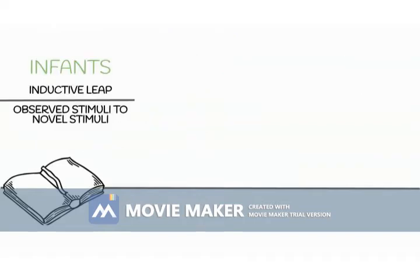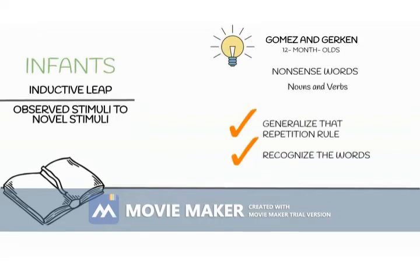Some studies have documented that infants can make the inductive leap from observed stimuli to novel stimuli. Gomez and Gerken presented twelve-month-olds with short strings of nonsense words. These words formed categories similar to nouns and verbs, and they showed that although they were unfamiliar words, infants were able to generalize a repetition rule and then recognize the words as familiar.